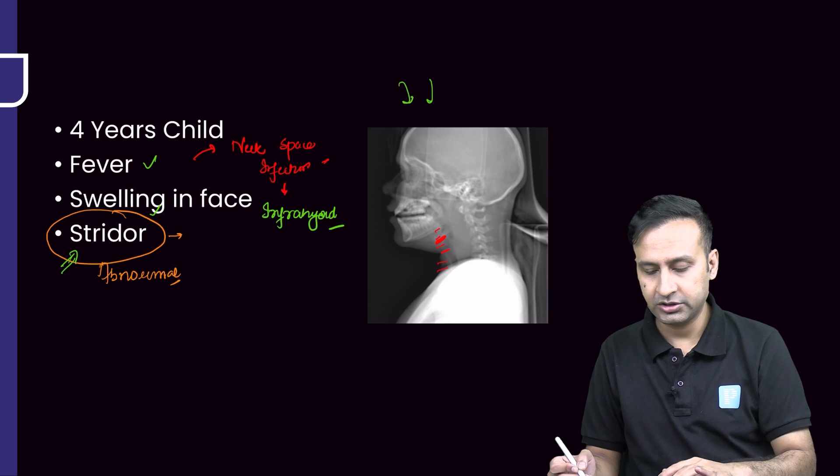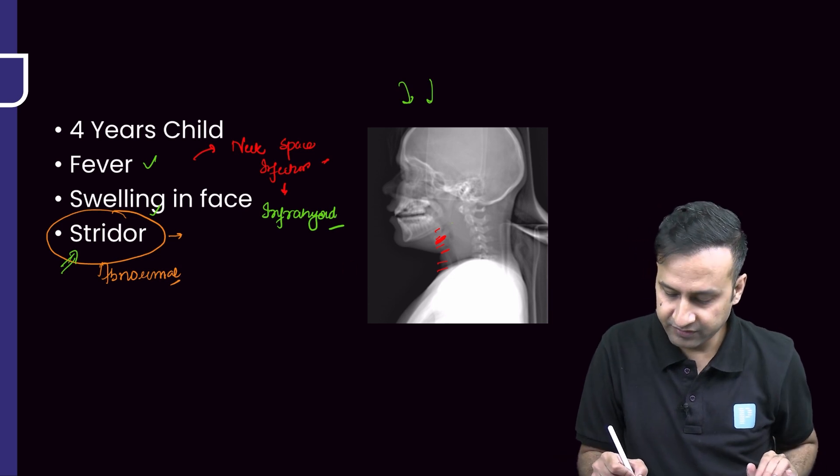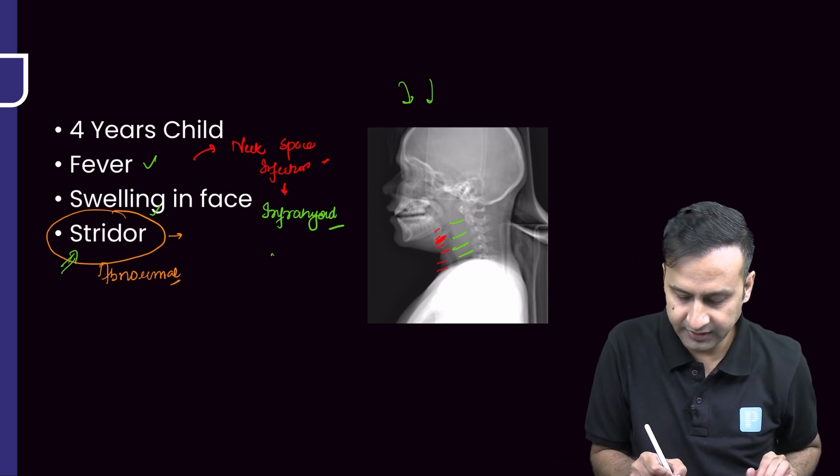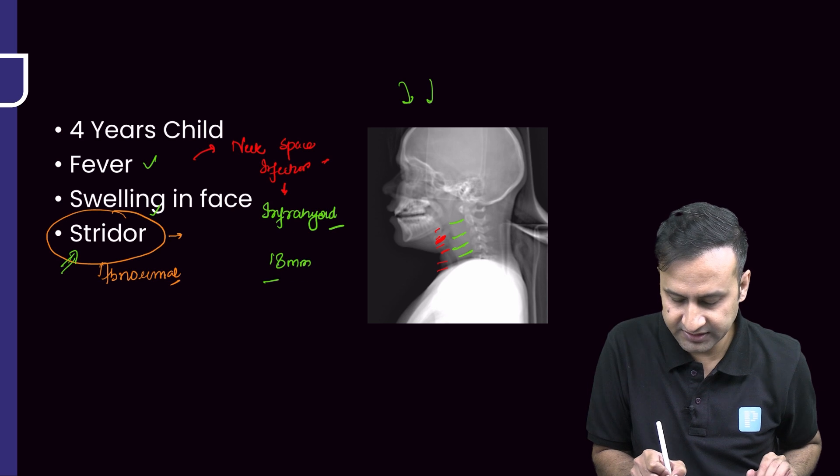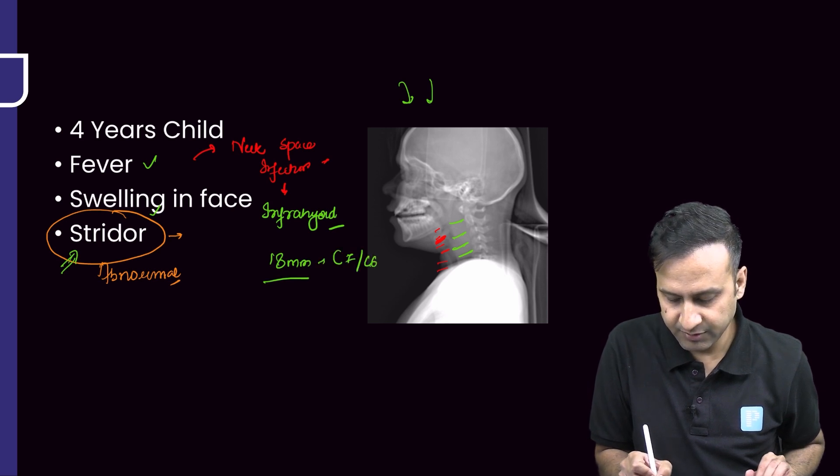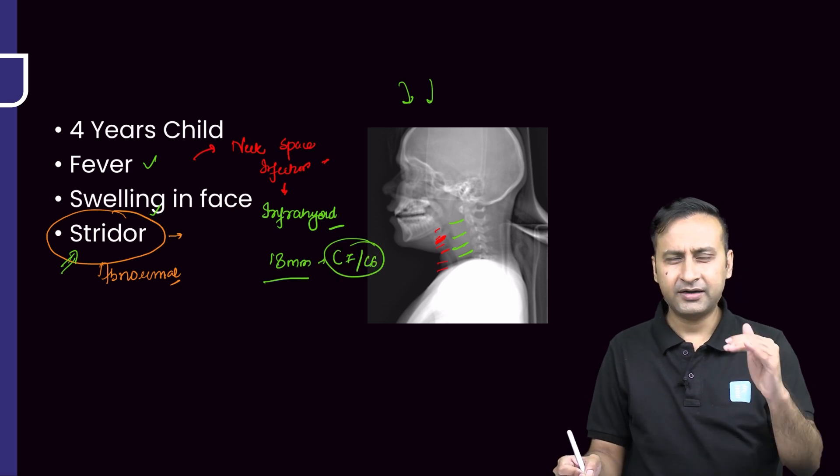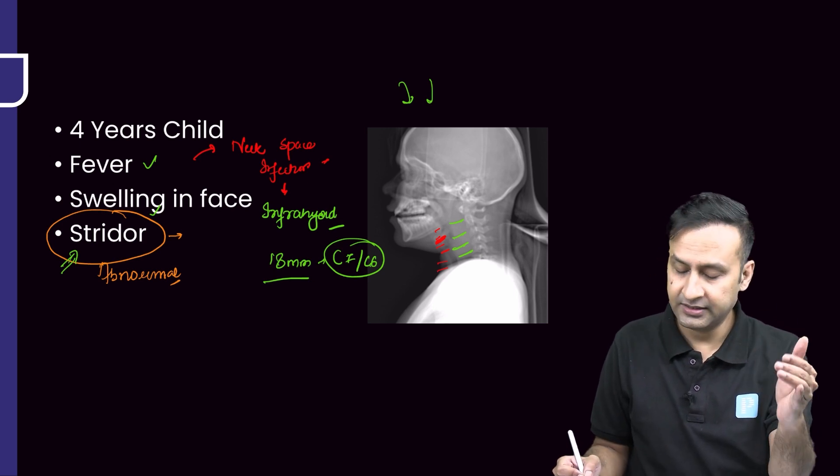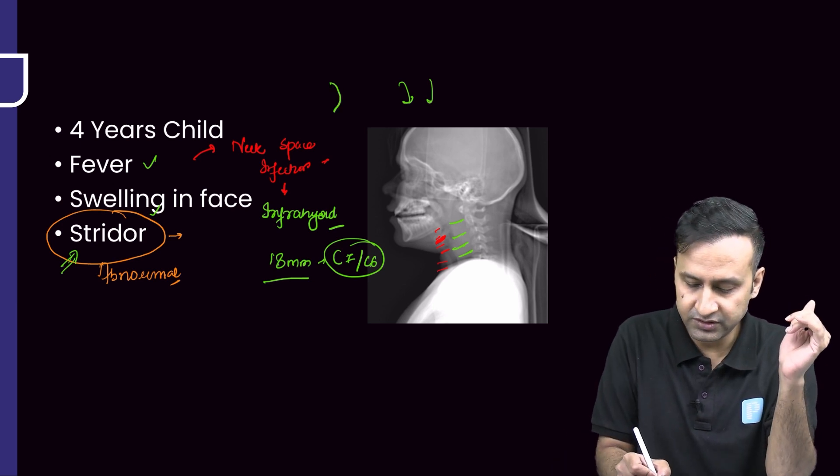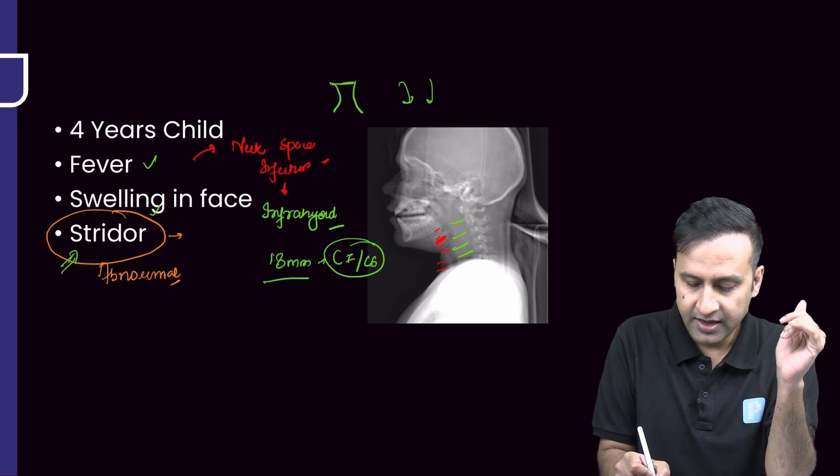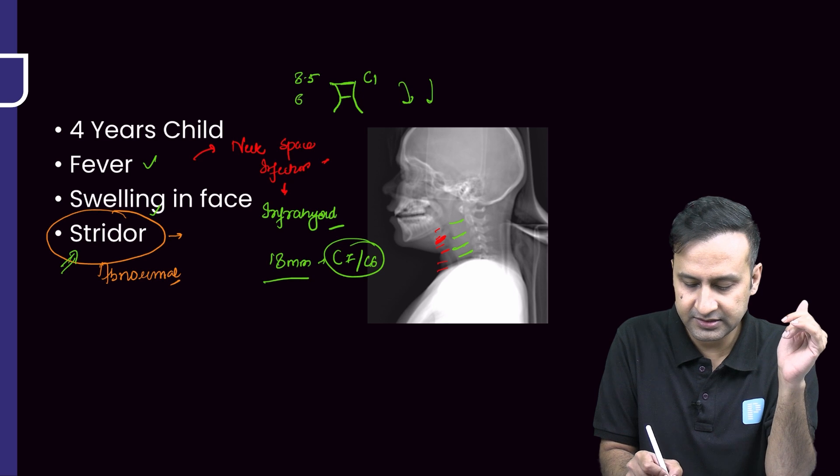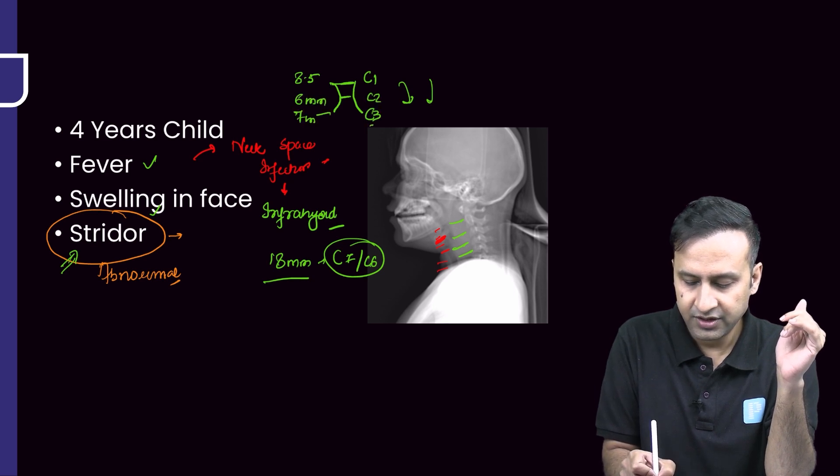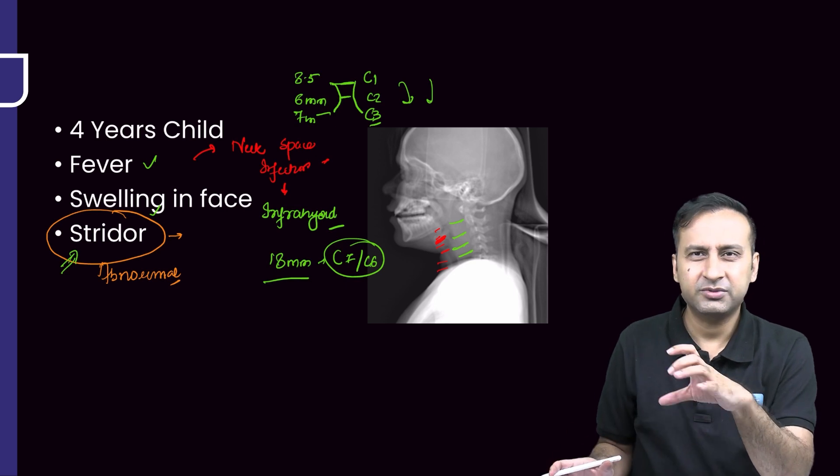It's more than 18mm everywhere. At C7 and C6, 18mm was the criteria. Above that, if I hope you remember, it starts from 8.5mm, then 6mm, then 7mm - it reduces first and then widens again. This is at the level of C1: 8.5mm, then 6mm at C2, and then 7mm at C3. Even if we don't know all these measurements, we're sure we're dealing with something abnormal.